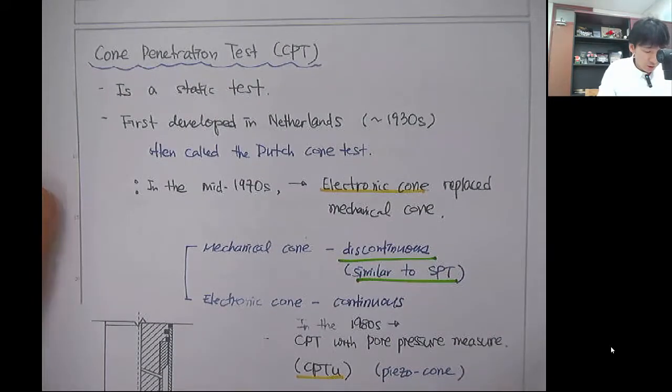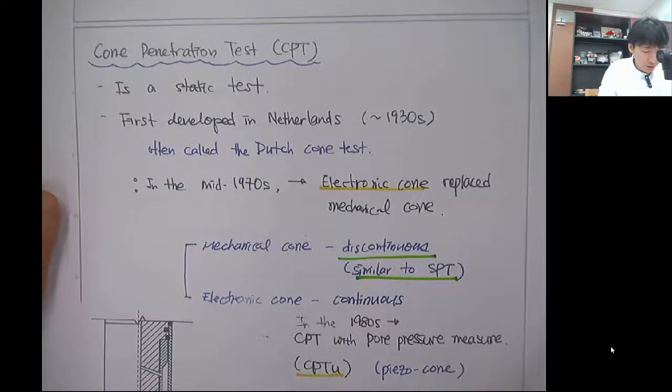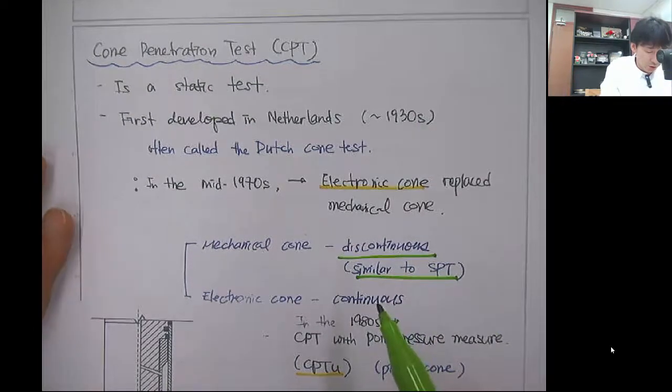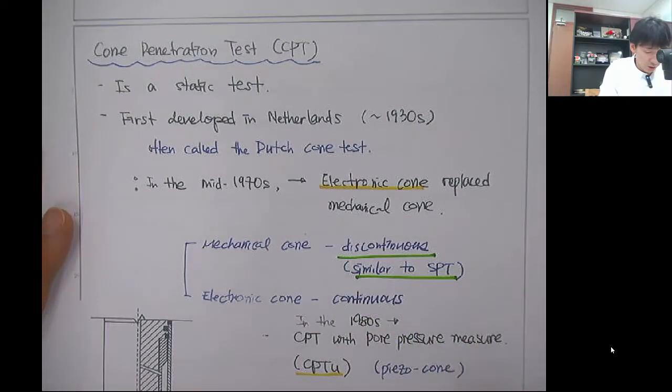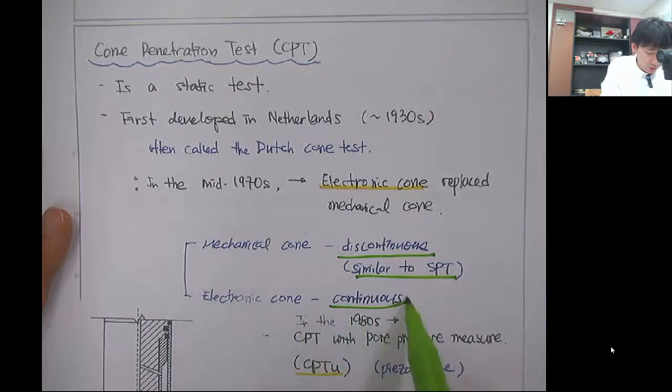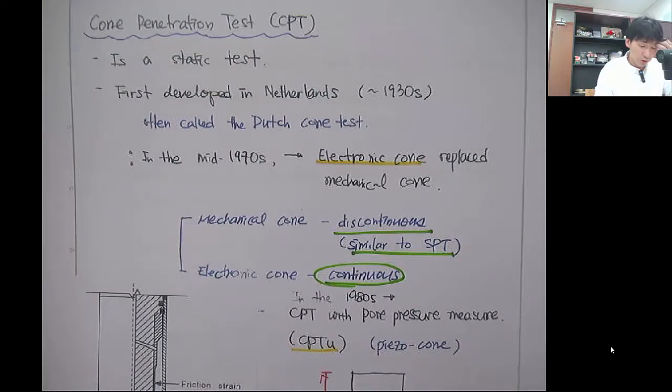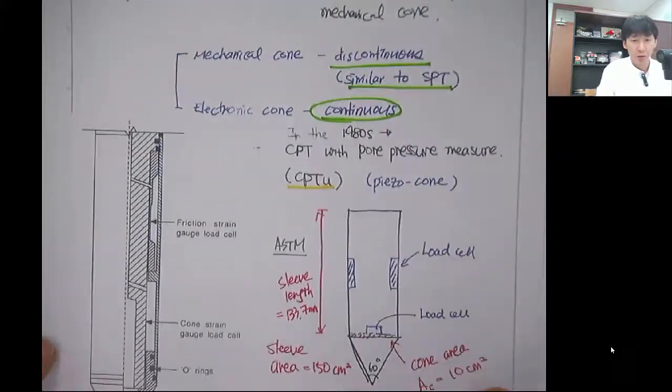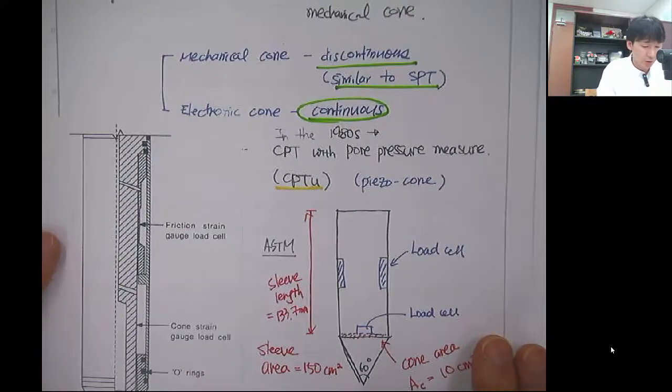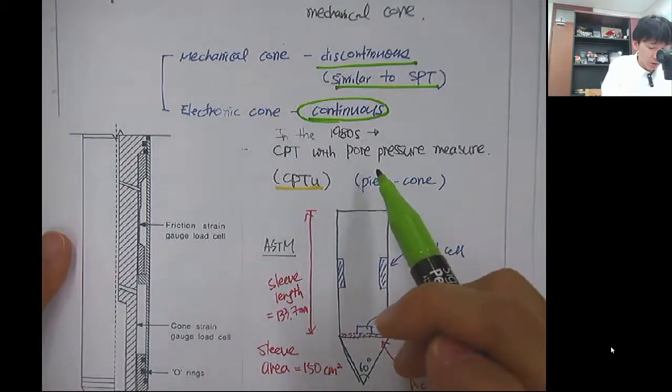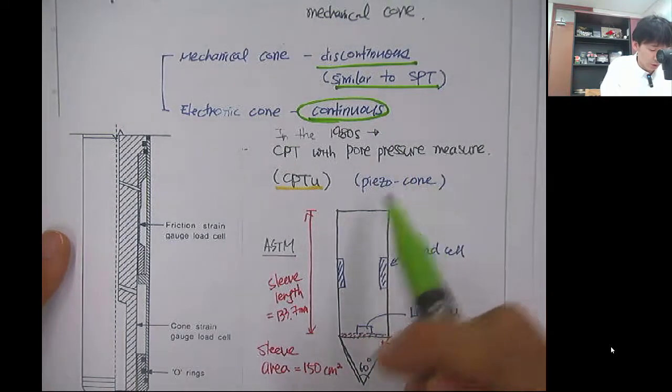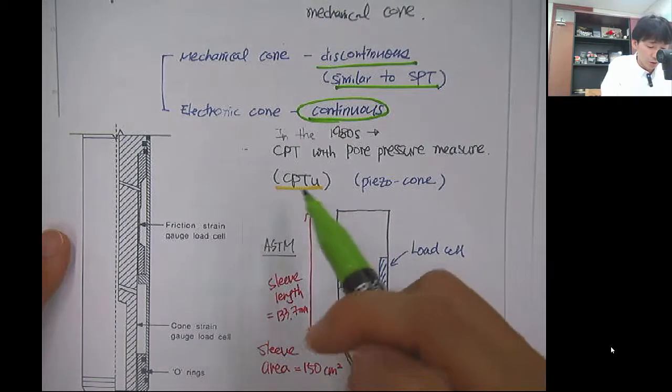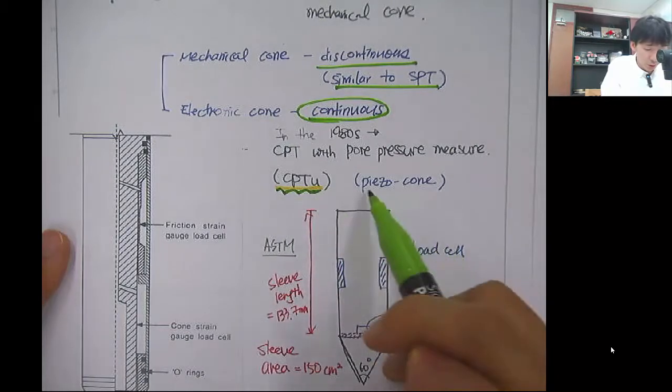But in the 1970s, electronic cone replaced the mechanical cone and it gave us the opportunity to get continuous data along the depth. In the 1980s, people started to install sensors at the cone, first installing pore pressure measurement using piezo material. This is called the CPT-U or piezo cone.